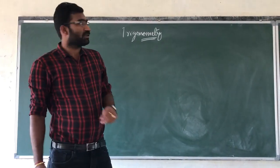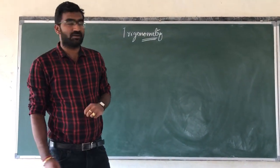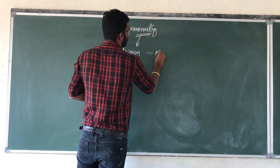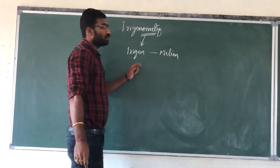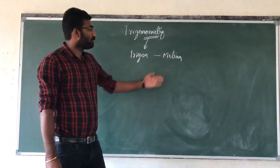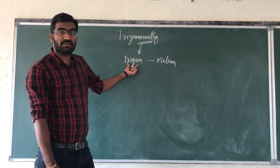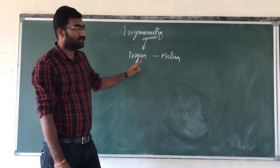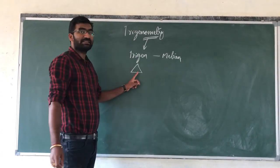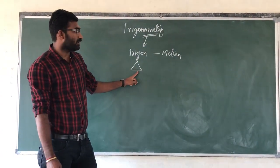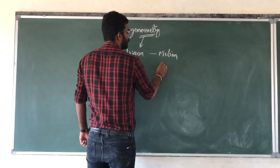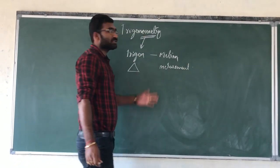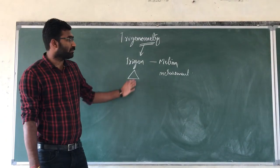The word Trigonometry is derived from Greek words — it is made up of two words: Trigon and Metron. Trigon means triangle and Metron means measurement. Trigon itself is made up of two words: Tri and Gon. Tri means three and Gon means side. So in total, Trigon means a three-sided closed figure, which is a triangle. And Metron means measurement. So in this chapter, we are going to study about the measurement of triangles.